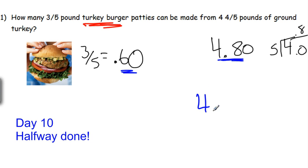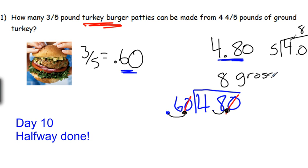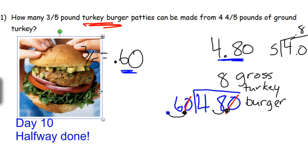How many times can 0.60 go into 4.80? We can cross out the extra zeros. We don't want to divide by a decimal, so move this over one. Now we're dividing by 6, and 6 goes into 48. Move the decimal the same number of places. How many times does 6 go into 48? That's just 8 times. So you can make 8 turkey burgers.